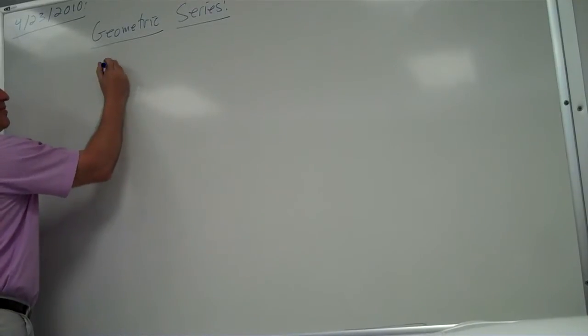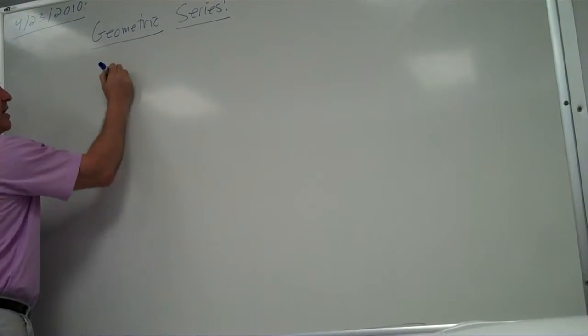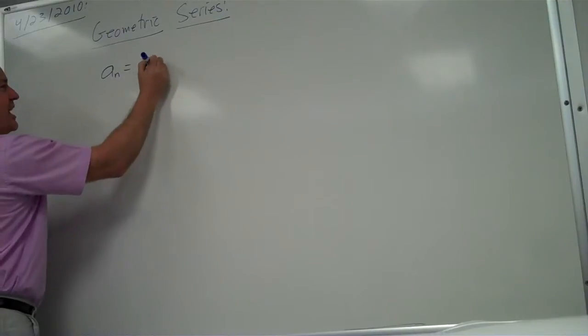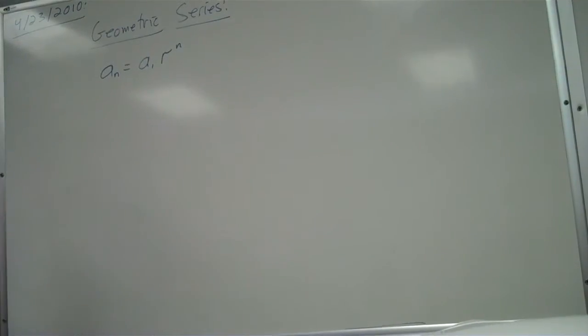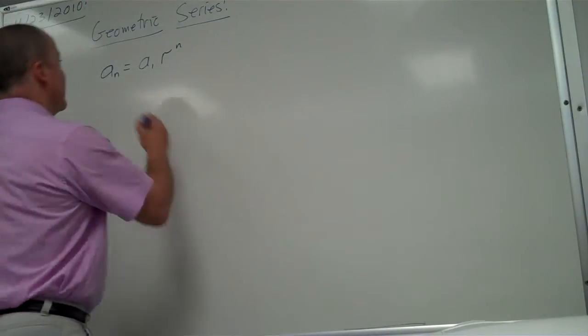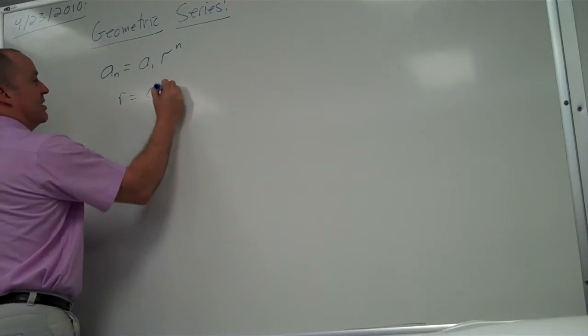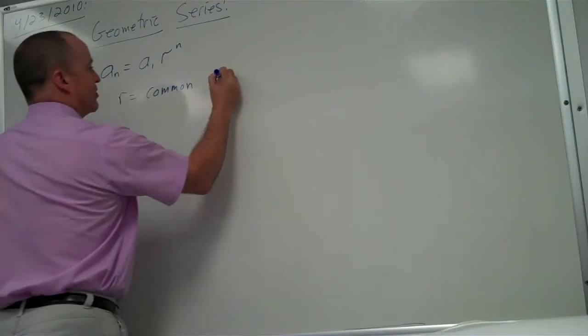So, a geometric series always looks something like a sub n equals a sub 1 times r to the n. It always looks something like that. r is called the common ratio.